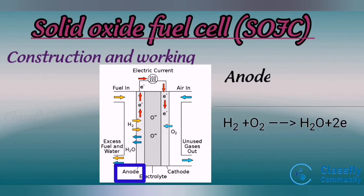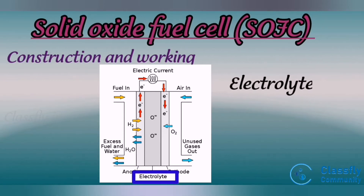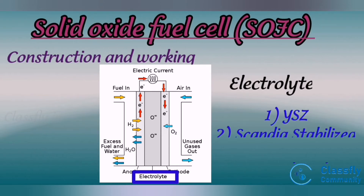At the anode, the reaction is: H₂ + O²⁻ → H₂O + 2e⁻. The electrolyte is a dense ceramic layer that conducts oxygen ions; its electronic conductivity must be kept as low as possible to prevent losses from leakage current. Popular electrolyte materials include yttria-stabilized zirconia (YSZ) and scandia-stabilized zirconia (ScSZ).